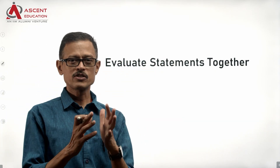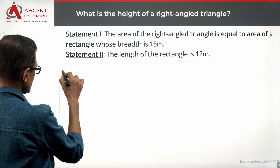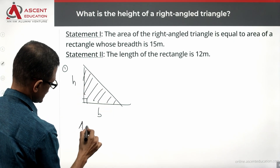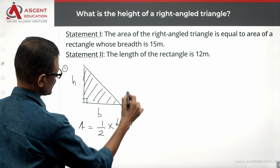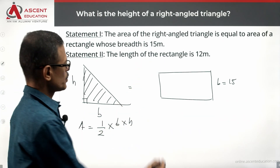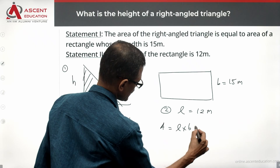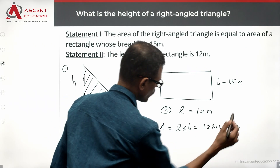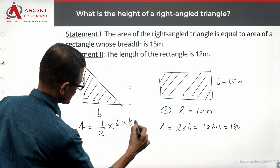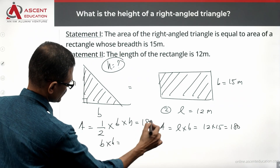Now let's evaluate the statements together to see if we get a unique value for the height of the right triangle. From Statement 1, the area of the right triangle equals half times base times height, and this equals the area of the rectangle whose breadth is 15. Adding Statement 2, the length is 12 meters. So the area of the rectangle equals 12 times 15, which equals 180.